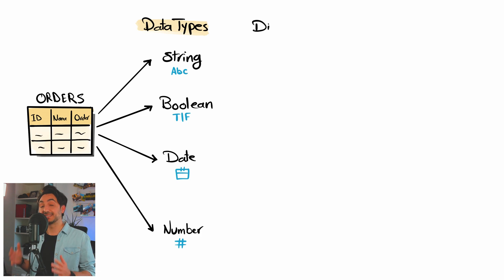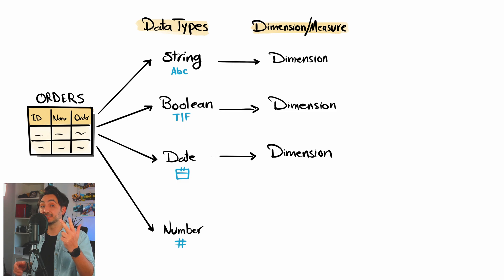Next, Tableau can assign it to another metadata info, either dimension or measure. Any data type that is not a number is going to be dimension, so string, boolean, and date all of them are going to be automatically dimension and cannot be converted to a measure. If the data type is number we could have it as a measure or dimension if it makes sense to do aggregation.